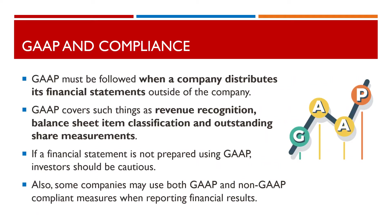GAAP must be followed when a company distributes its financial statements outside of the company. If a corporation's stock is publicly traded, the financial statements must also adhere to rules established by the US Securities and Exchange Commission. GAAP covers such things as revenue recognition, balance sheet item classification, and outstanding share measurements. If a financial statement is not prepared using GAAP, investors should be cautious. Some companies may use both GAAP and non-GAAP compliant measures when reporting financial results. GAAP regulations require that non-GAAP measures are identified in financial statements and other public disclosures, such as press releases.